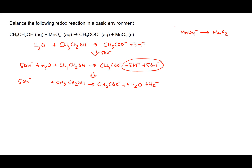Now we do the permanganate half reaction: MnO4- forms MnO2. We follow the exact same process. First, balance the non-oxygen, non-hydrogen atoms: one manganese on the left, one on the right — that's taken care of. Step 2, balance the oxygens by adding water: 4 oxygens on the left, only 2 on the right, so we add 2 H2O to the product side.